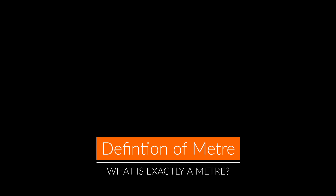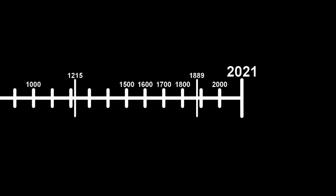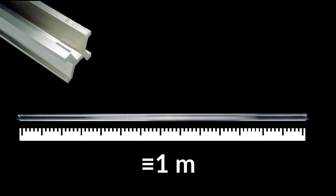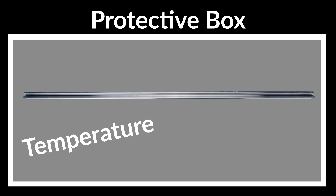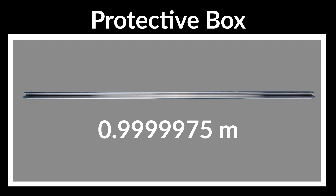I did promise you more detail on the definition of a meter. In 1889 they created a metal bar that they defined as having the length of one meter. But the problem with a physical object is that no matter how well you control the temperature, humidity, and environment, the size of that object is not constant — it will change over time.